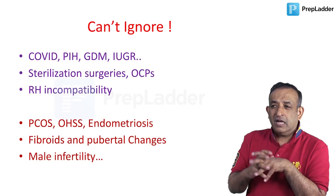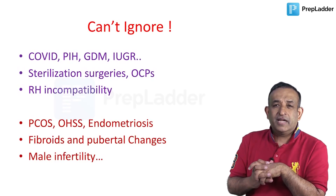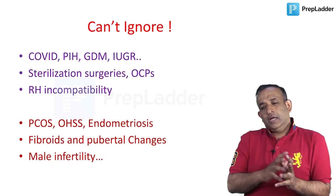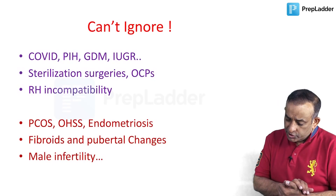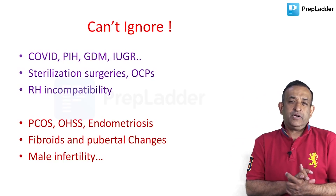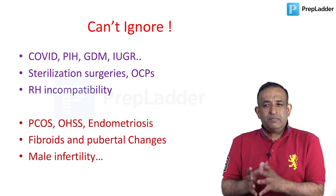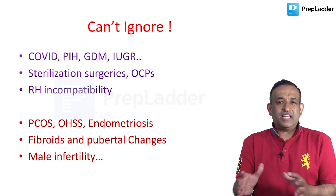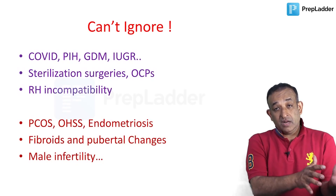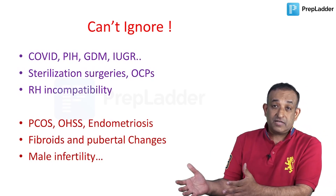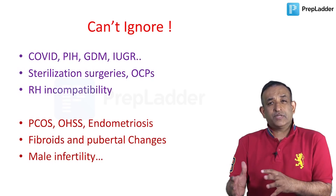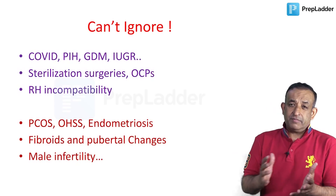In gynecology, definitely do not ignore PCOS — it is discussed so much that it is now one of the easier topics to attempt. Along with that, endometriosis and the complication of ovarian stimulation — ovarian hyperstimulation syndrome. Read about pubertal changes and their timings. Also have a look at adenomyosis alongside endometriosis — they have almost the same etiology and similar management lines, but endometriosis is for women who are not getting pregnant while adenomyosis mostly occurs in multiparous women.